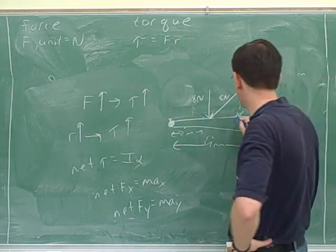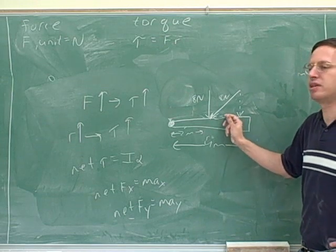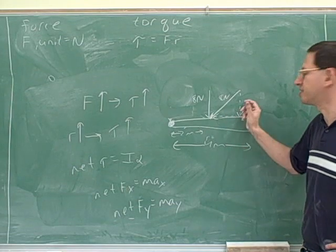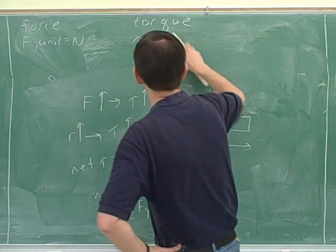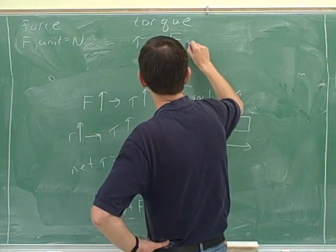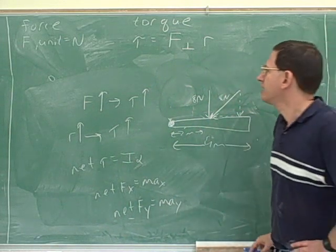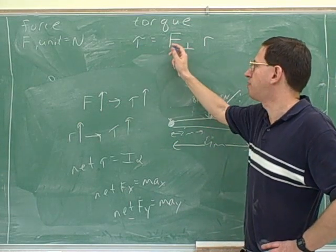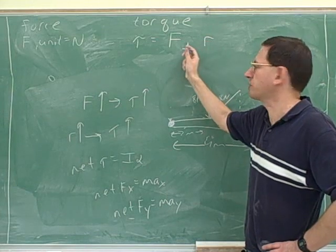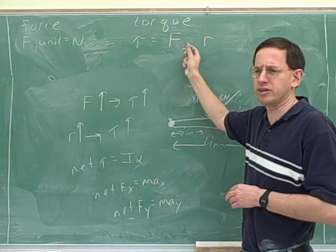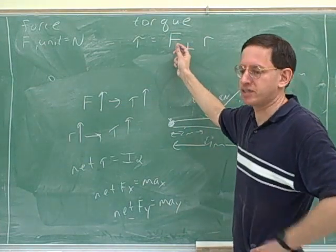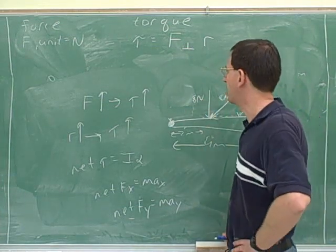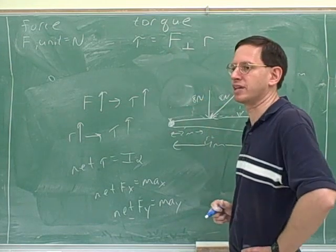A force has one component that is perpendicular and one component that is parallel. The component of the force that's parallel we can disregard — it's not going to cause any rotation, at least not in terms of torques. Only the perpendicular component causes rotation. So what I wrote before wasn't quite right: the torque doesn't depend on the full force. It only depends on the component of the force that is perpendicular to R. That's what the F-perpendicular symbol means — this is the component of the force that is perpendicular to the R vector.